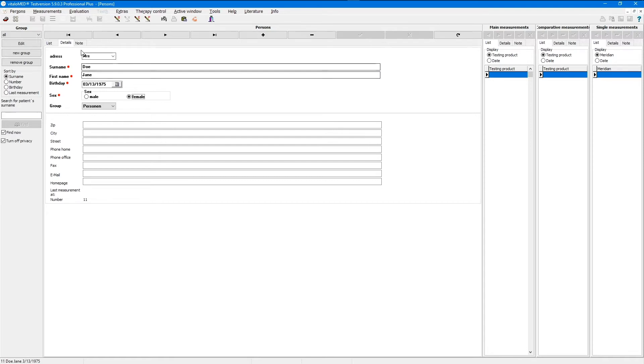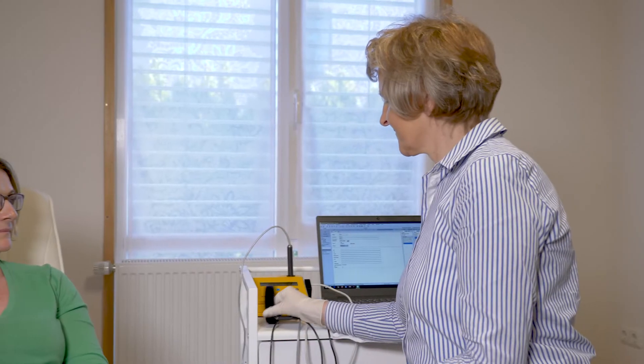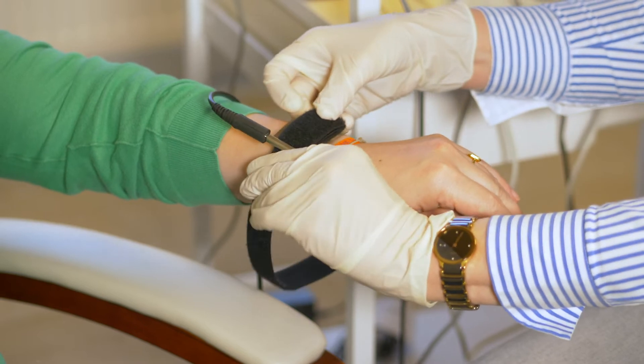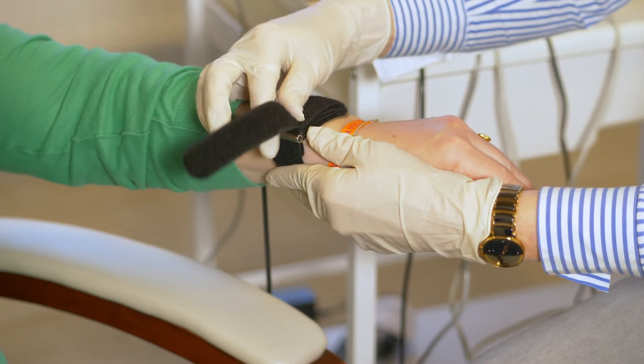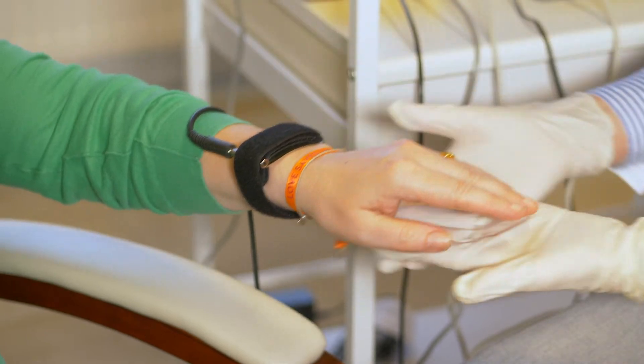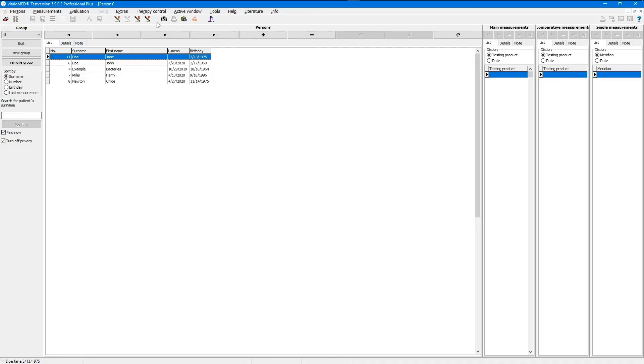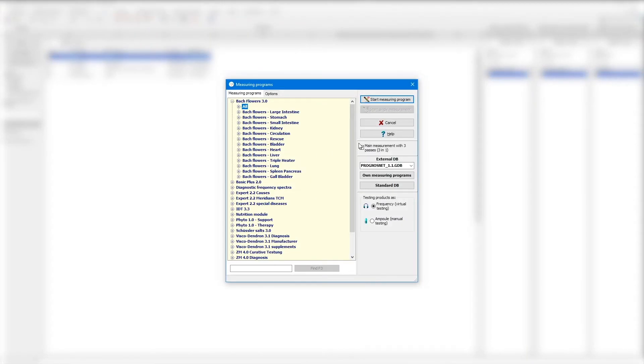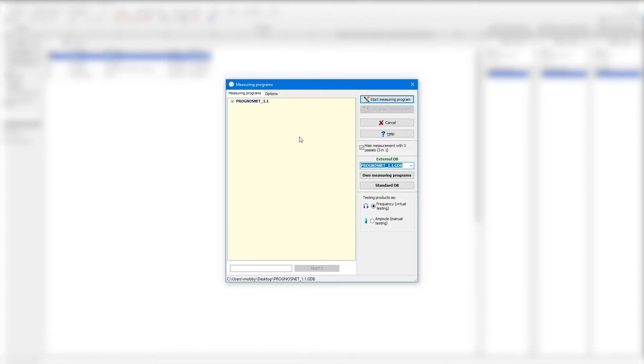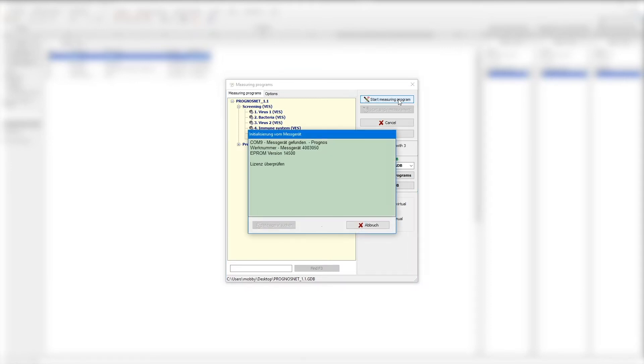Preparing for measurement, the reference electrode is attached with the bare metal side to the skin of the patient's left wrist. Choosing the patient's name, press the button P as shown in the upper toolbar. Then click the external DB for PrognosNet. A window opens. Tap on the plus button in front of PrognosNet and screening VES to open the program for measuring the six wave files or diagnosis frequency spectra. Before starting the measuring program, click the button main measurement with three passes three in one. The three basic measurements are made without frequency spectra.